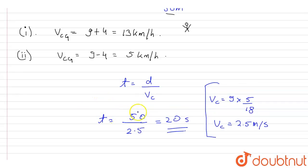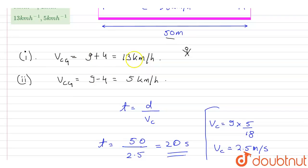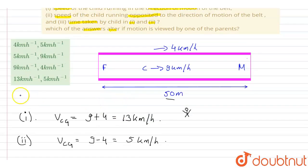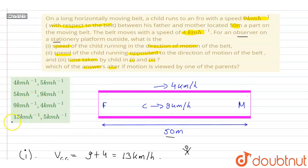So the time will be 20 seconds in both cases, the velocity will be 13 km/h in case one and 5 km/h in case two. Looking at the options, option D will be correct.